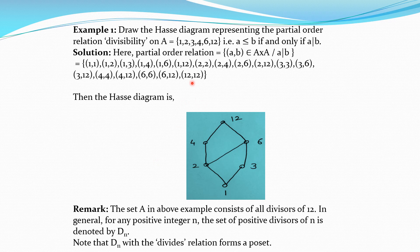Then 2 divides 6 directly, so we take 6 above 2 to the right side and join them by a line segment. Note that 4 is not related to 6, so 6 is placed separately. For 2 divides 12: since 2 divides 4 and 4 divides 12, there exists 4 in A such that 2 divides 4 and 4 divides 12. So we draw the line segment from 4 to 12 — it is not necessary to draw a separate line segment from 2 to 12.